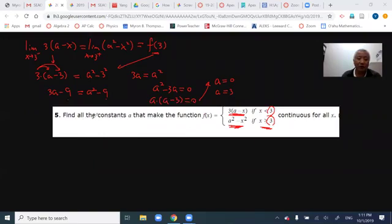So they ask to find all the constants A to make the function continuous. A may be 0 is fine, or 3 is fine. Since they find all of them, this one and this one are answers, okay?